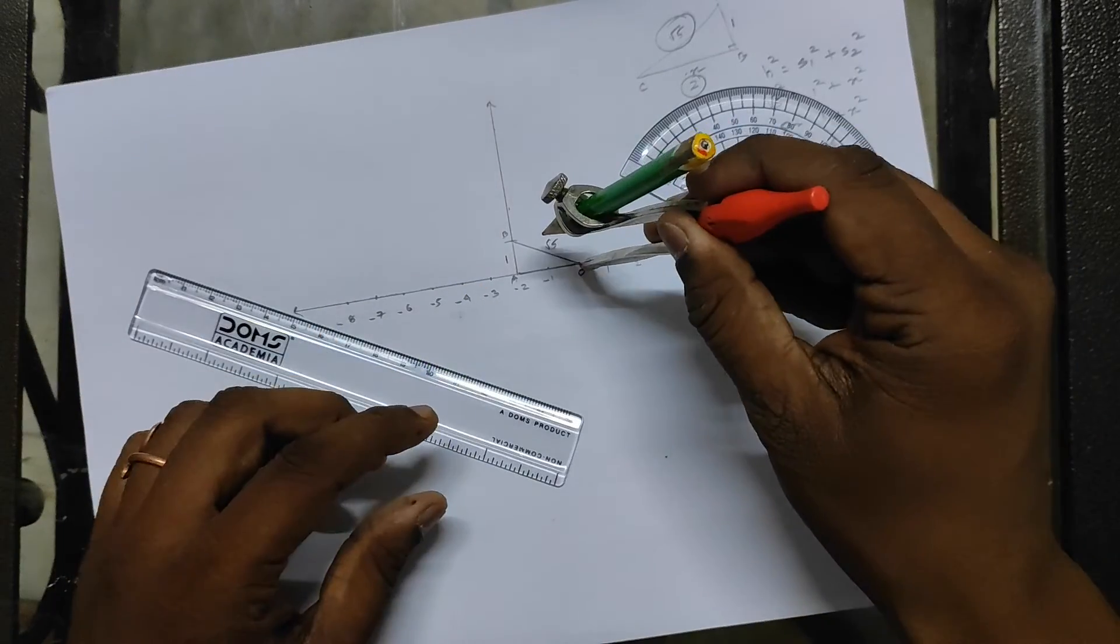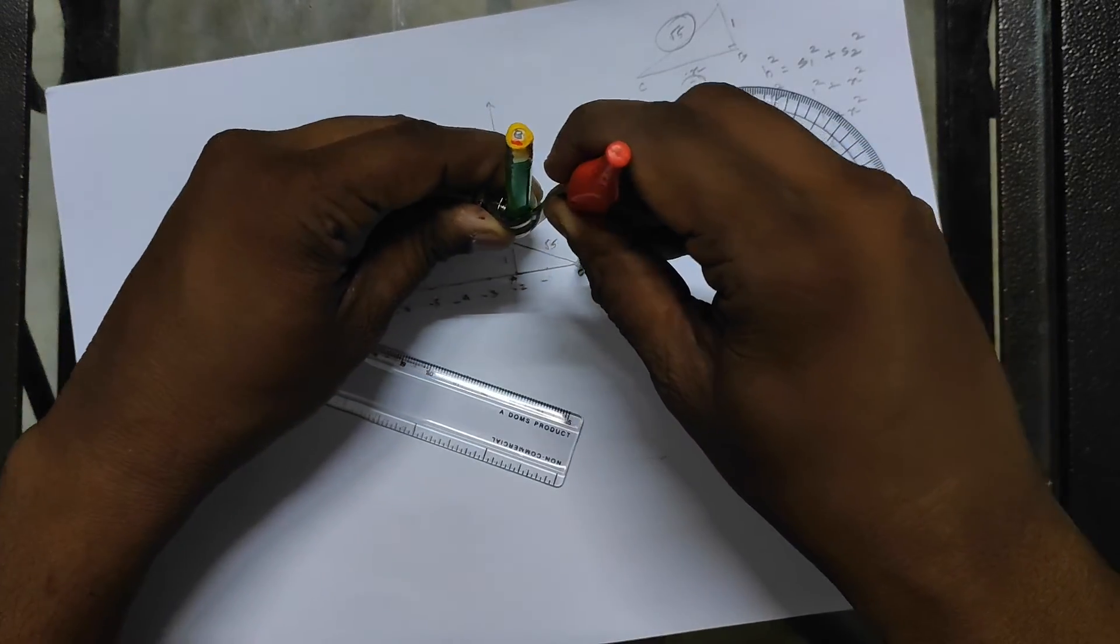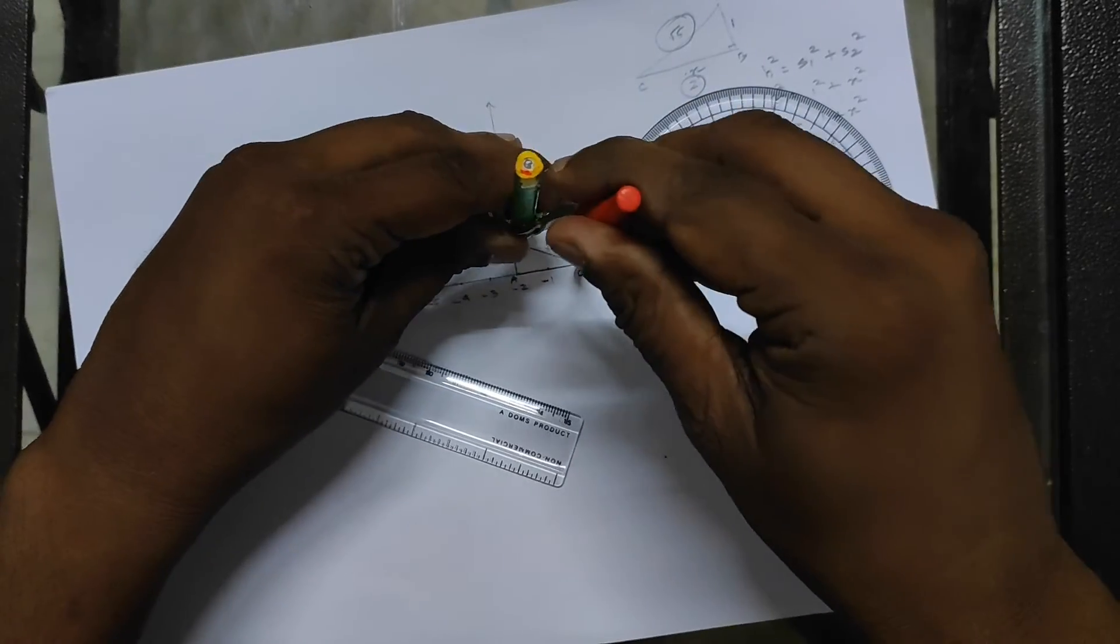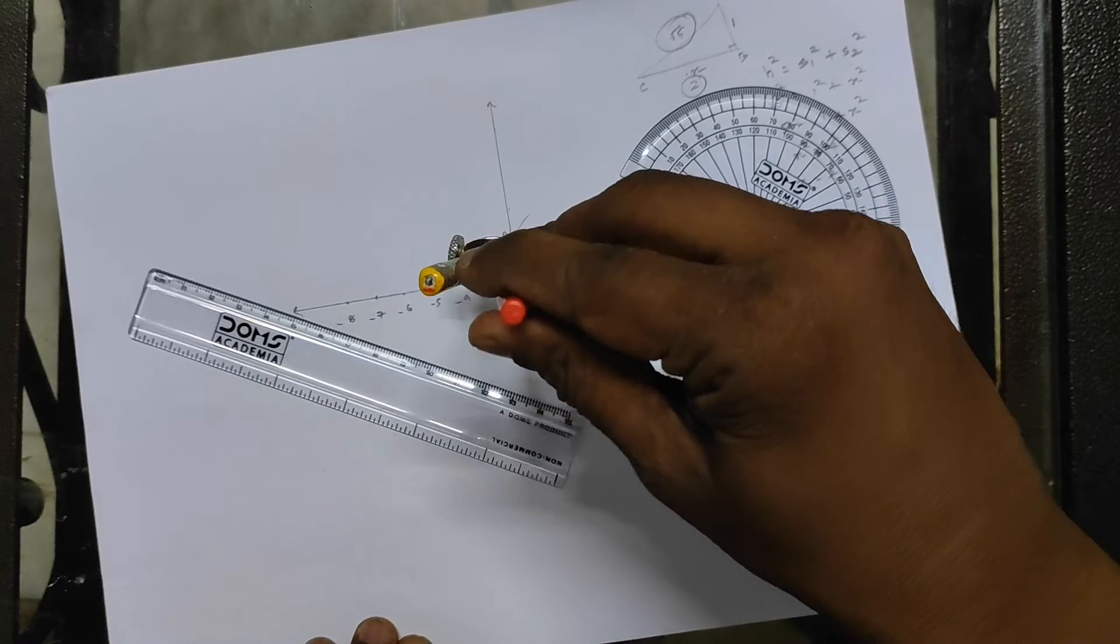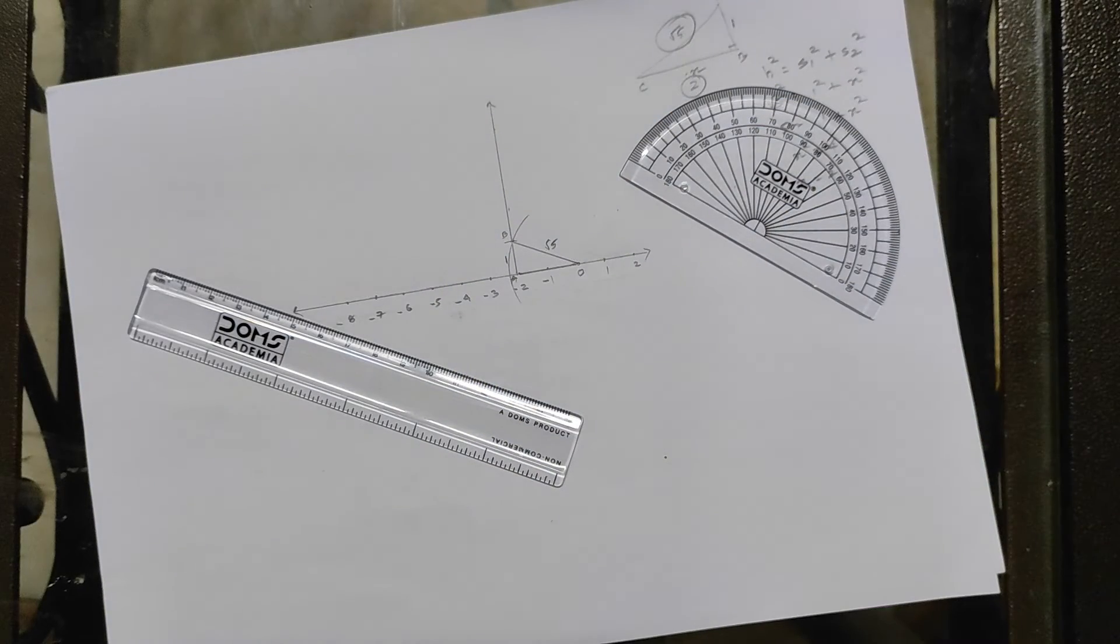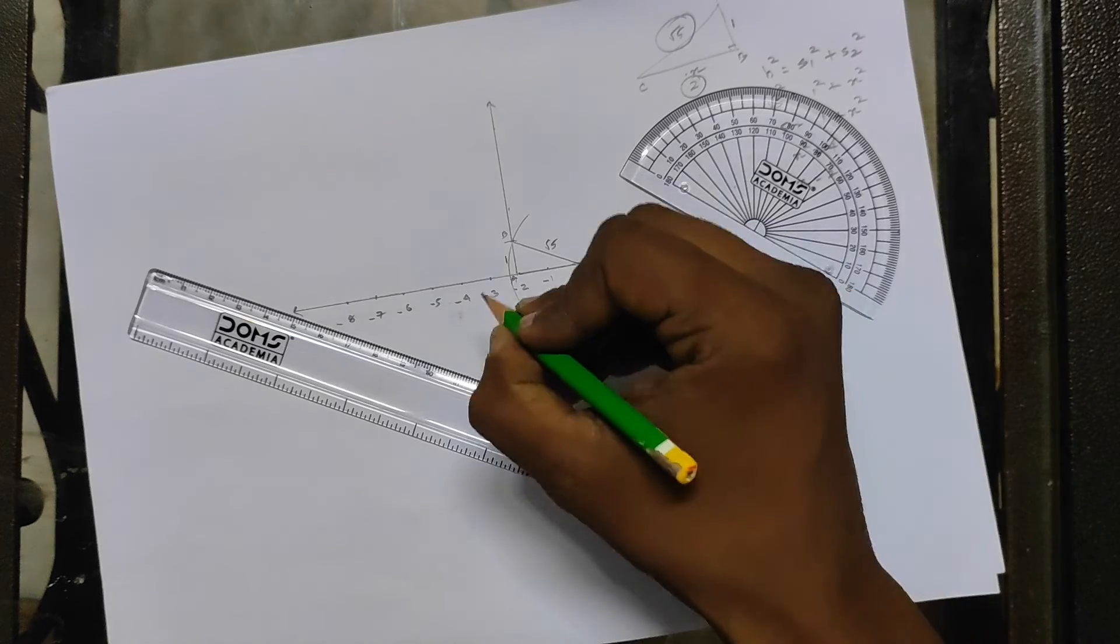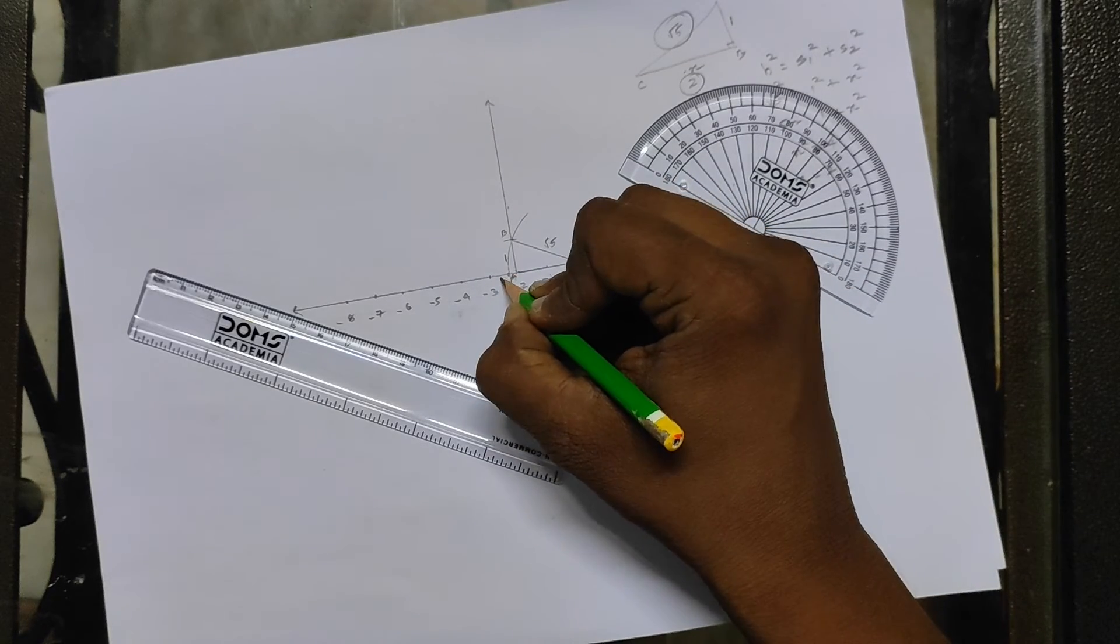Okay, going to take measurement of OB. Okay, radius OB, and then you're going to just make an arc like this. Got it.